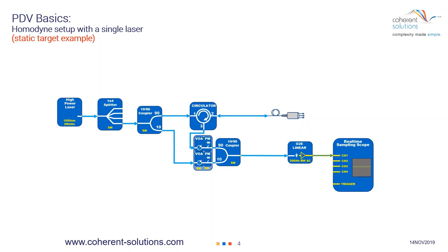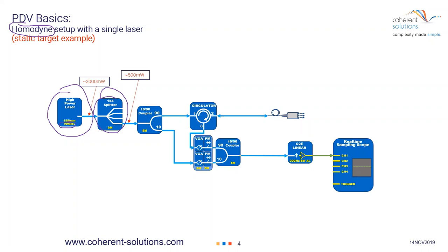Let's start with some PDV basics. If I only have a single laser, this is known as a Homodyne-type setup, meaning there's really only one wavelength. In this case, I show a relatively high-power laser — a 2,000 milliwatt laser. I have a splitter here; 2,000 milliwatts is a lot of power to be putting through these components, and this helps cut the power down. After going through this 1x4 splitter, we have approximately 500 milliwatts. It also allows the other unused channels to be used for additional channels.